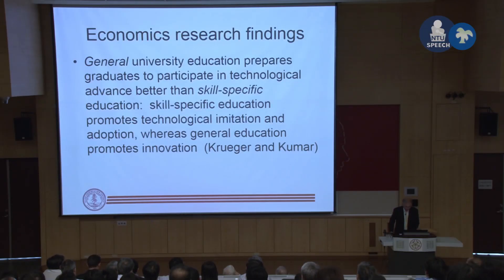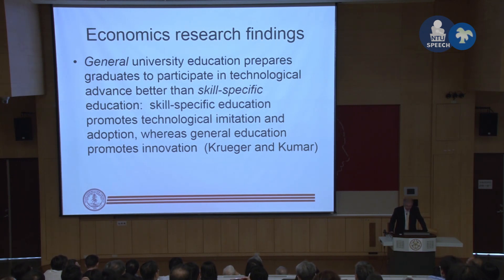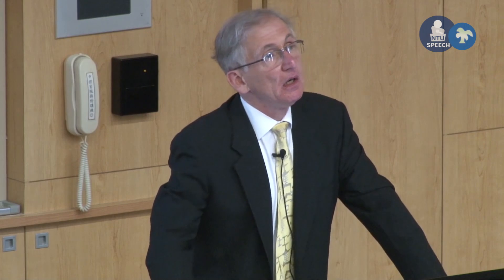Their theory suggests that European education policies favoring specialized vocational education might have worked well in terms of growth rates and welfare during the 1960s and 70s, when new technologies changed slowly. In the information age of the 80s and 90s, when new technologies emerged at a more rapid pace, it may have suboptimally contributed to slow growth and increased the growth gap relative to the US. This article was published ten years ago.